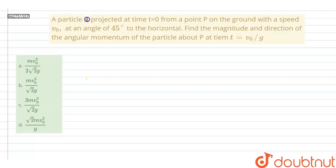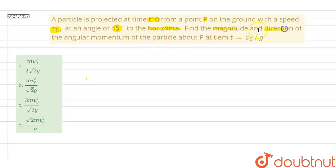In this question, a particle is projected at time t equal to 0 from a point P on the ground with speed v0 at an angle of 45 degrees to the horizontal. Find the magnitude and direction of the angular momentum of the particle about P at time t equal to v0 upon g.